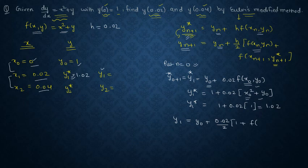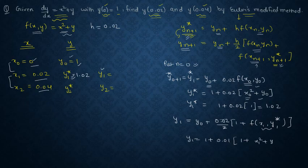You have already found out the value here x₀, y₀ which is 1 plus f(x₁, y₁*). f(xn+1) means if you put n as 0, x₁, y₁*.